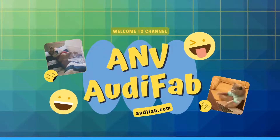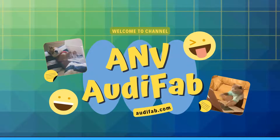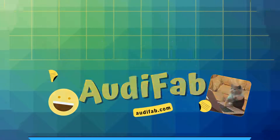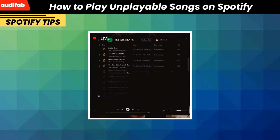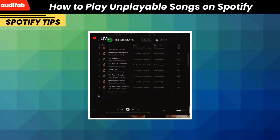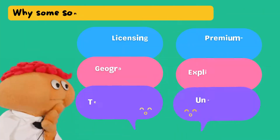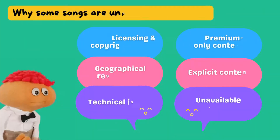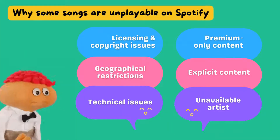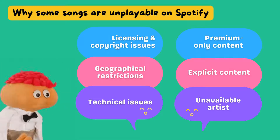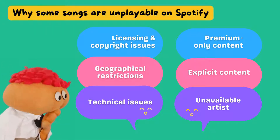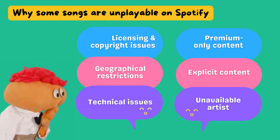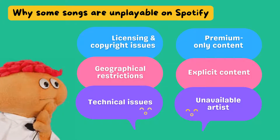Welcome back to the AudiFab channel. Today we'll show you how to play unplayable songs on Spotify and fix grayed out tracks. Before we begin, let's first discuss why some songs may not play on Spotify — it could be due to licensing and copyright issues, geographical restrictions, technical problems like internet connection, premium-only content, explicit content, or unavailable artists.